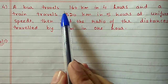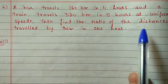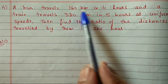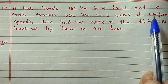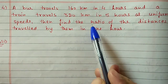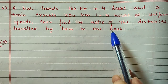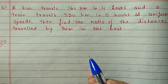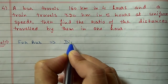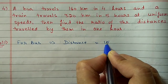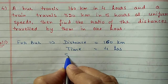Question 4: A bus travels 160 km in 4 hours and a train travels 320 km in 5 hours at uniform speed. Find the ratio of distances travelled by them in 1 hour. Uniform speed means constant speed — not increasing or decreasing. Distance in 1 hour equals speed, so we need the ratio of their speeds. For the bus: distance is 160 km, time is 4 hours.